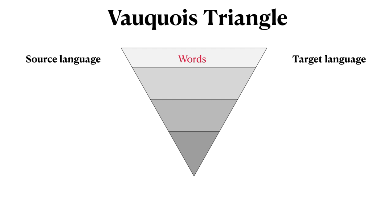We could now think of the underlying levels of linguistic analysis that one could perform on that surface level. Beneath the surface level, one could imagine a level of syntax, representing the structure of the original source language sentence, or on the target side, the structure of the target language sentence. Below syntax is semantics, representing the meaning of the utterance or the sentence.